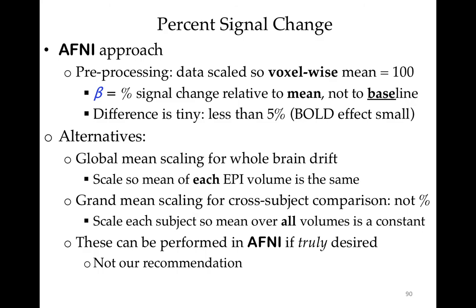There are alternative approaches. One is global mean scaling to allow for whole-brain drift in signal — you scale so the mean of each EPI volume is the same inside a brain mask. Another is grand mean scaling, where you scale each subject by a single number so the mean over all volumes is a constant. We don't recommend these in AFNI, because with high-field imaging at 3T and especially 7T, images are not uniform across the brain — the deeper parts tend to be darker — so they'll appear to have smaller betas if you don't scale at a voxel-wise level.